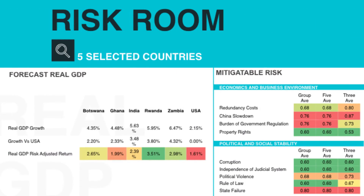We looked at the real GDP growth information in the Zurich Risk Room, as well as the information for the USA, which we used as our benchmark because it is the country of domicile for Hematite. Adding those together, we created a real risk-adjusted return ratio or percentage return that we used to determine which countries were the most attractive investments.